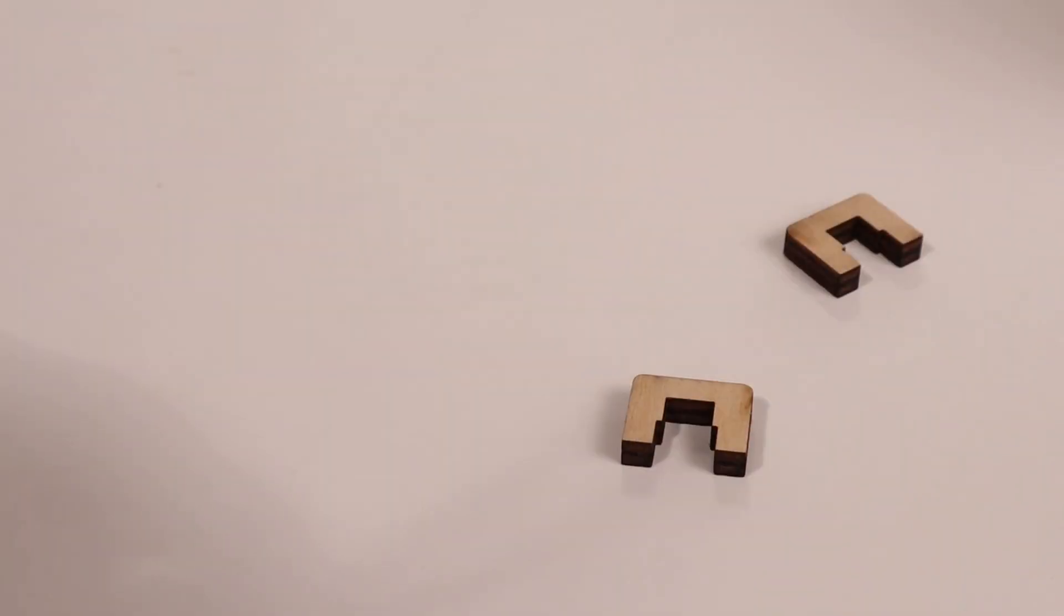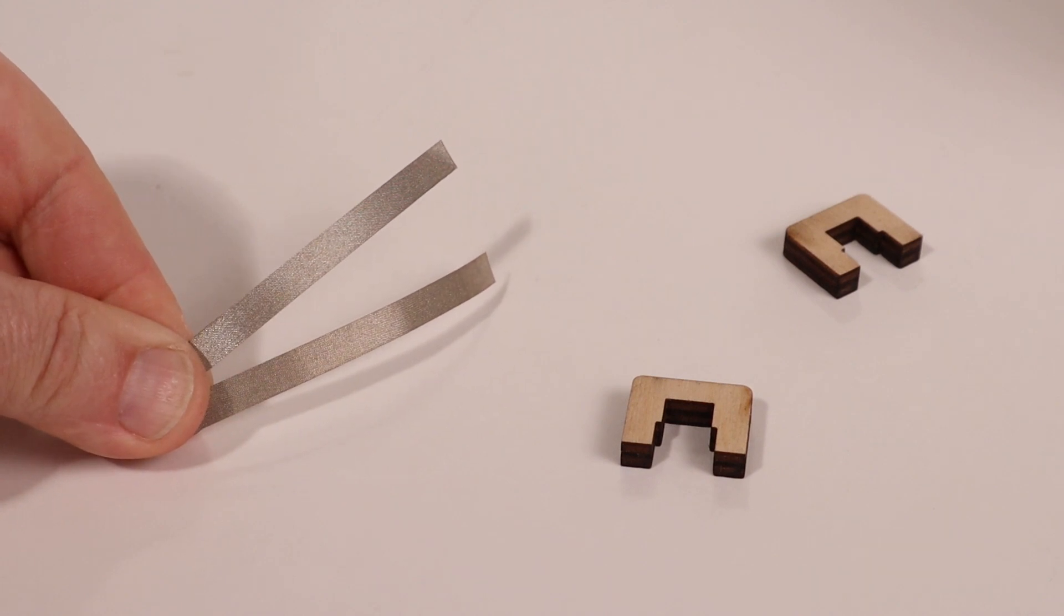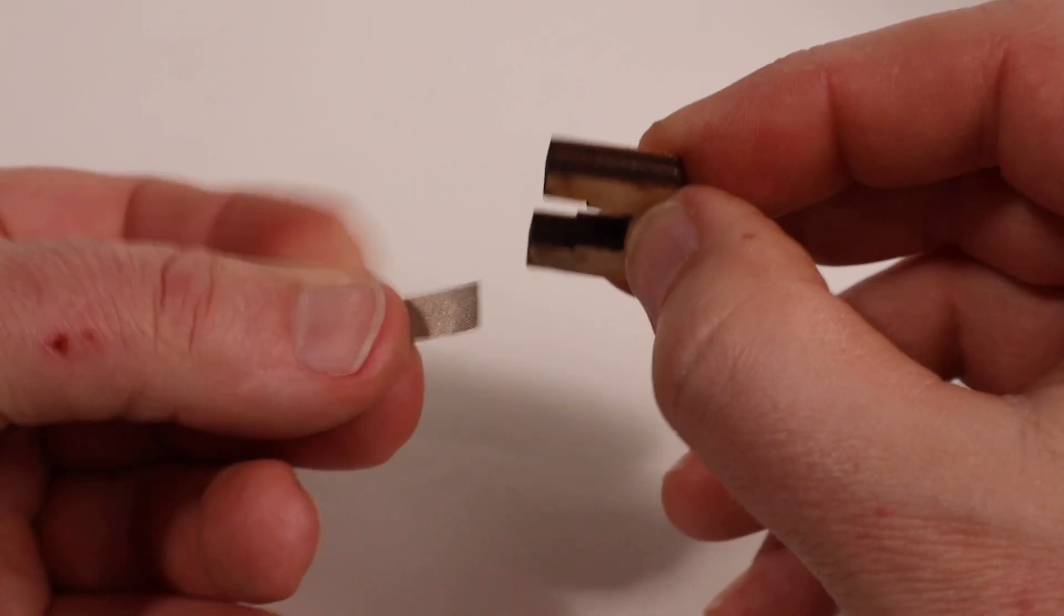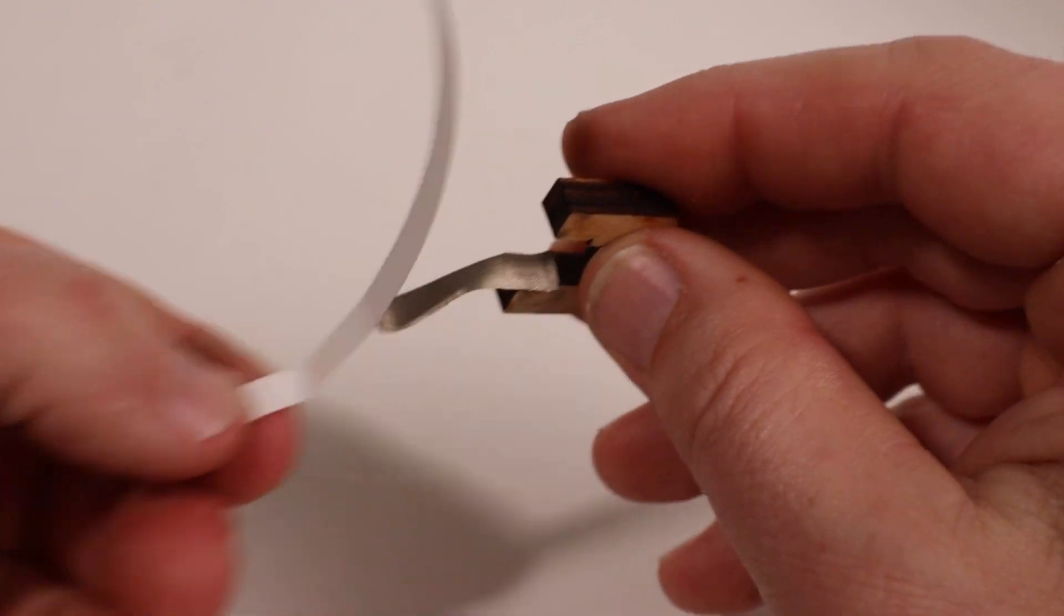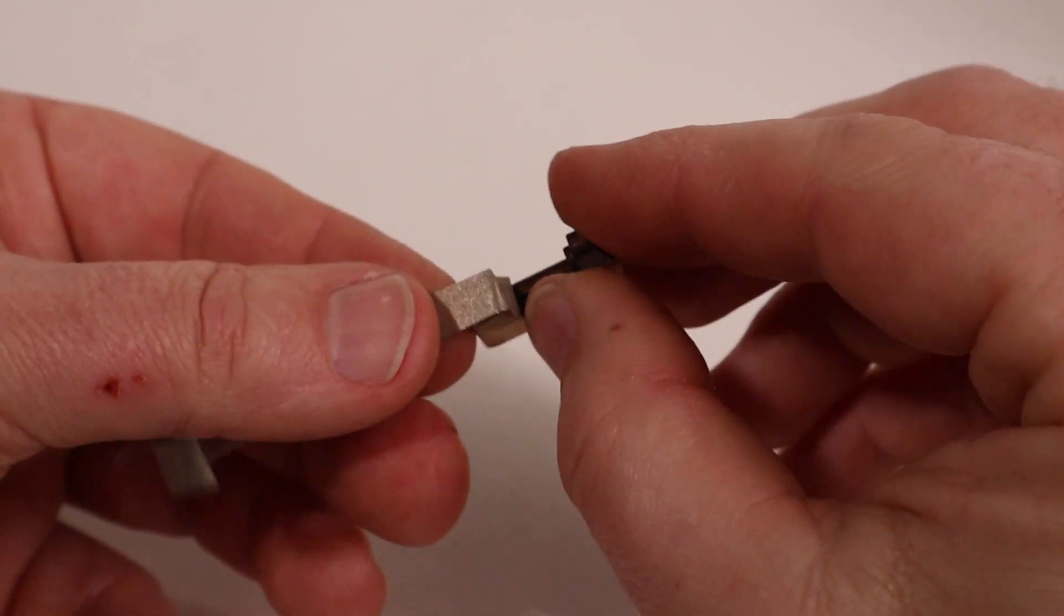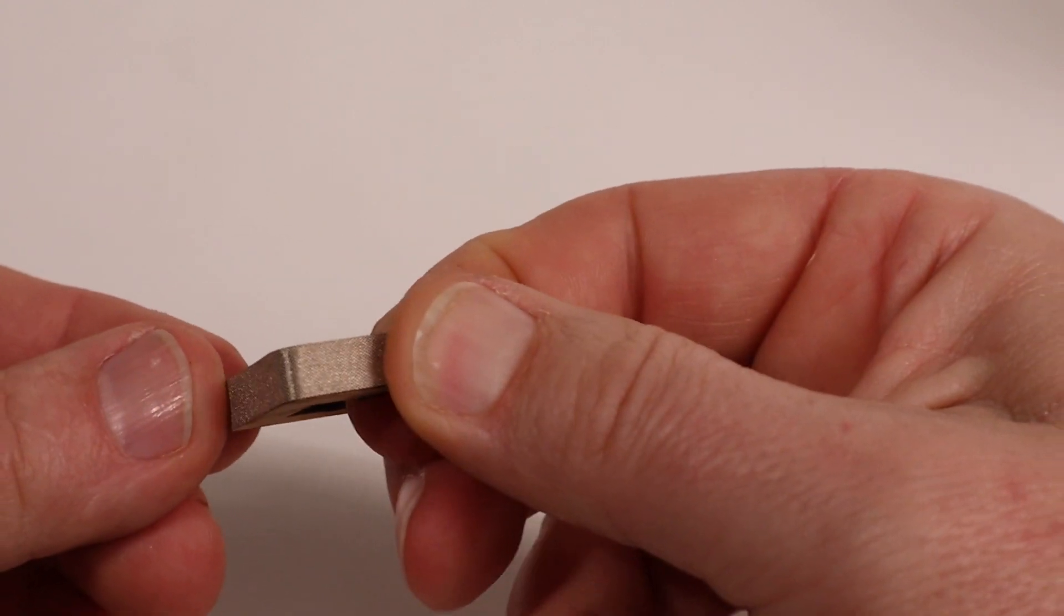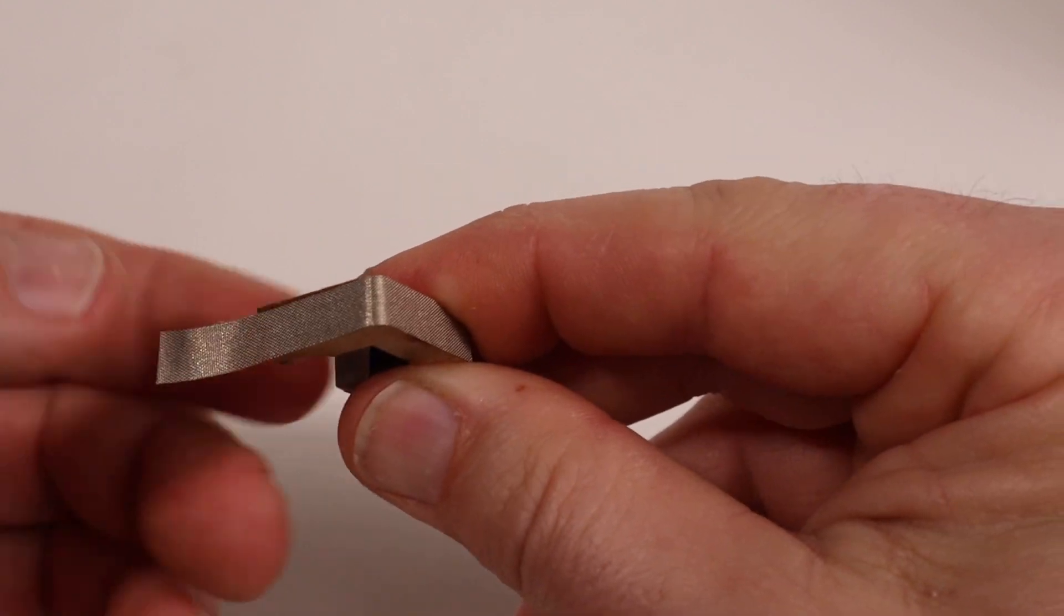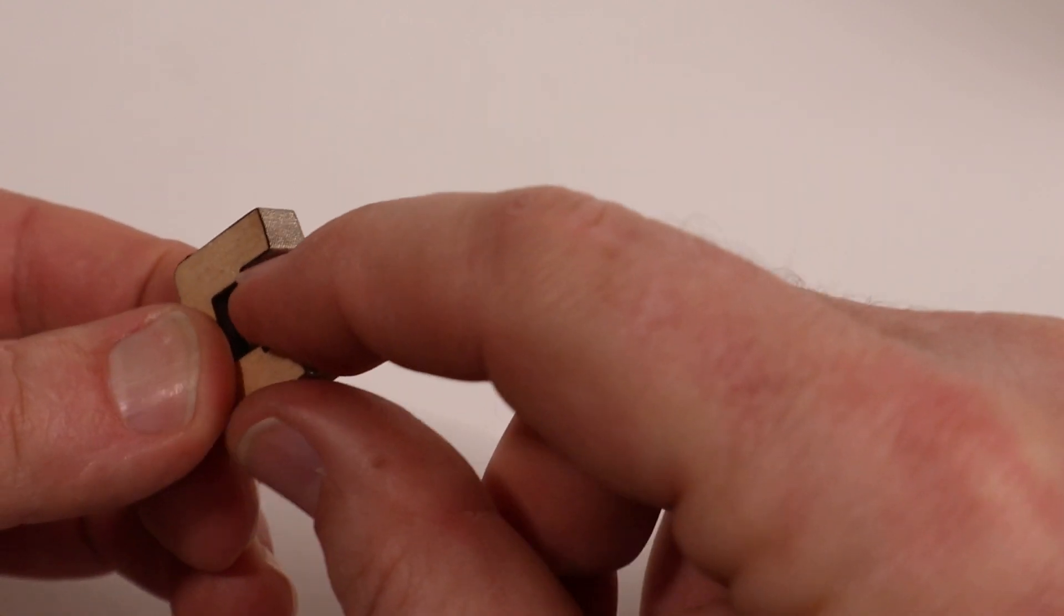Now we'll make some switches by adding maker tape to these wooden laser cut pieces. Cut a piece of maker tape long enough to wrap around the outside and part of the inside of the small U-shaped wood pieces. Peel off the backer and stick the maker tape onto the wood. The maker tape will go all the way around turning this wood block into a conductor.